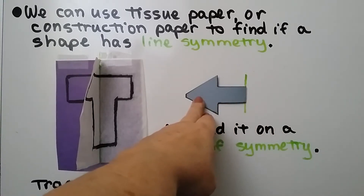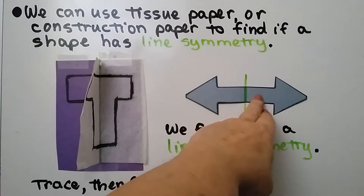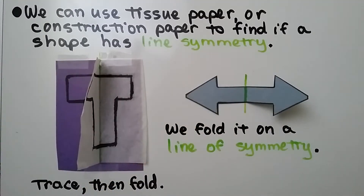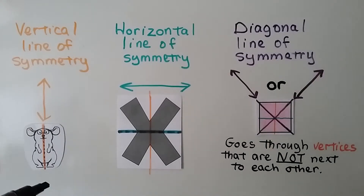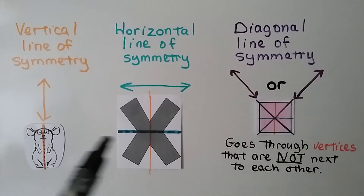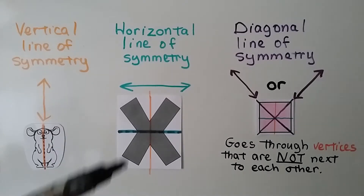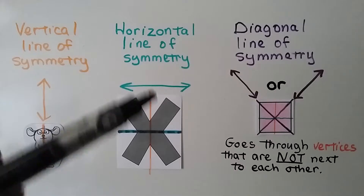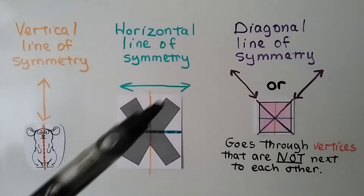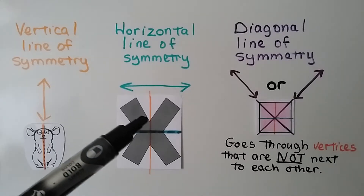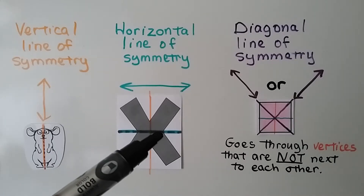We can have a vertical line of symmetry that goes up and down — if we drew one through the little mouse, we'd be able to fold it on that line and it would match perfectly. We can have a horizontal line of symmetry that goes across. This X also has a vertical line of symmetry, and it looks like it might have a diagonal line of symmetry, but this doesn't quite look like it would match here.